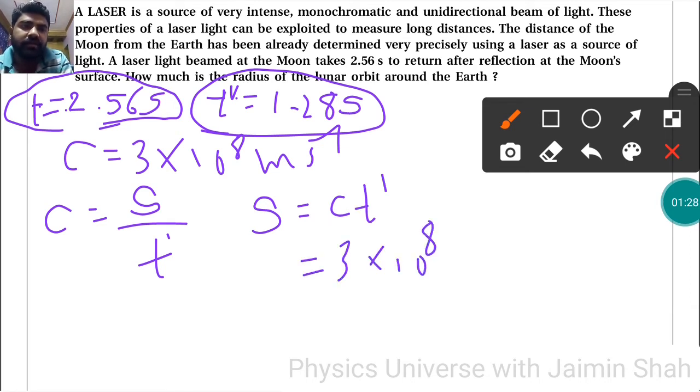3 into 10 raise to 8 into 1.28. So here, the answer is 3.84 into 10 raise to 8 meter.